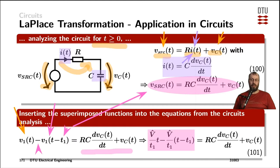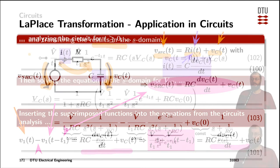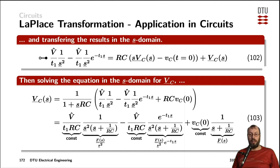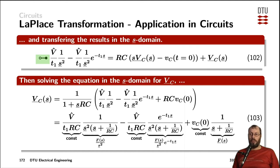Now we had a differential equation in the time domain. Since we would need to differentiate and integrate in the time domain to solve for the capacitor voltage, we can transfer the whole equation into the S domain by applying the Laplace transformation. Then we can solve it simply by multiplying, dividing, adding, and subtracting. The two parts from the source signal are transferred into the S domain as a ramp function — therefore one divided by the complex frequency S squared — and we have the slope being V-peak divided by T1. Similarly, the pink part with the negative slope and time delay is modeled in the frequency domain by multiplication of an exponential function.